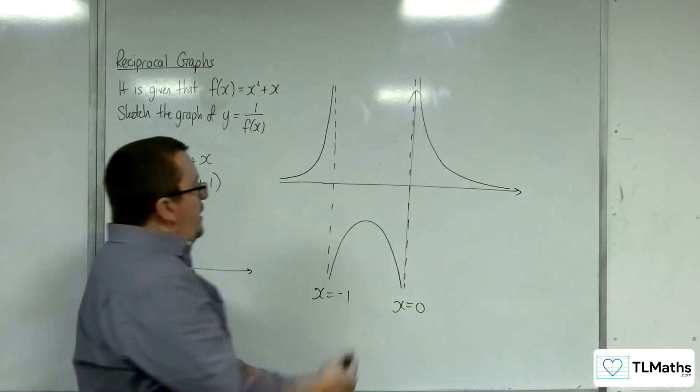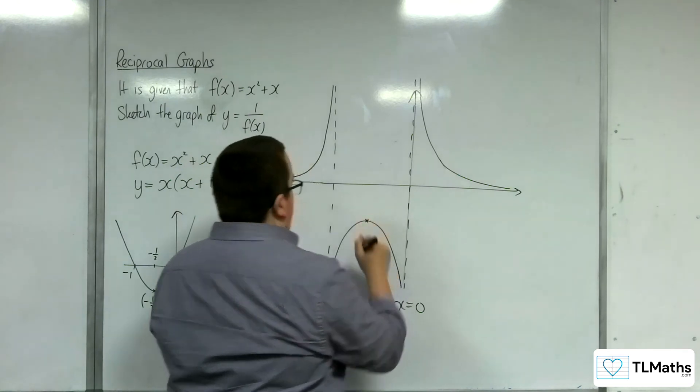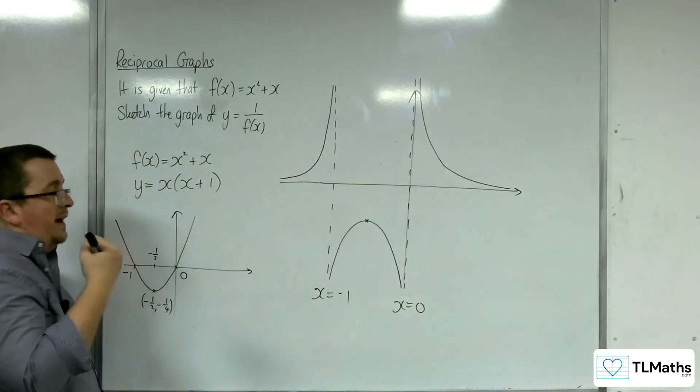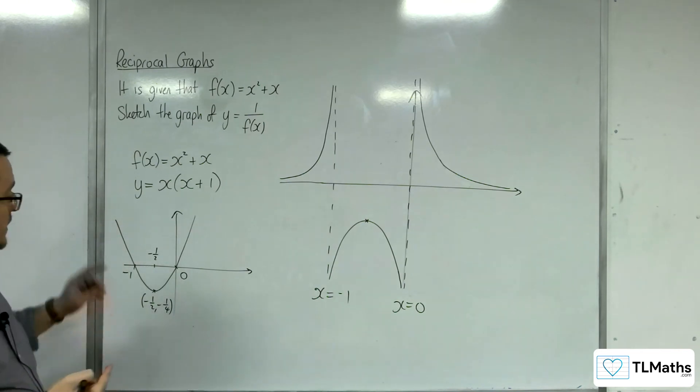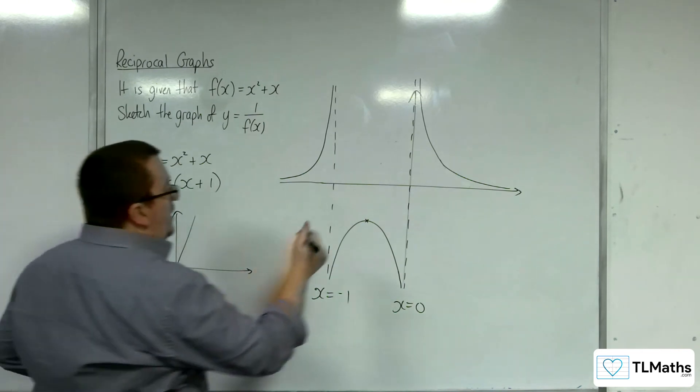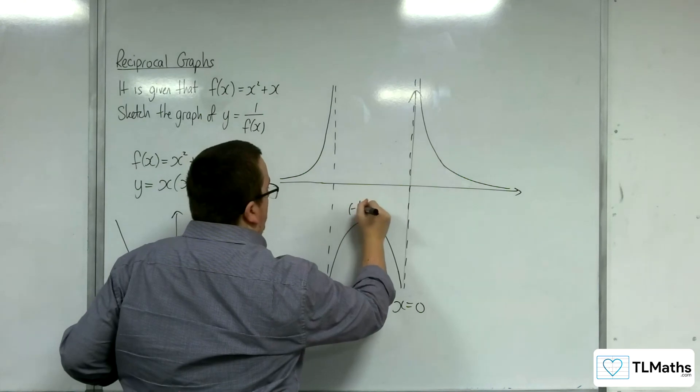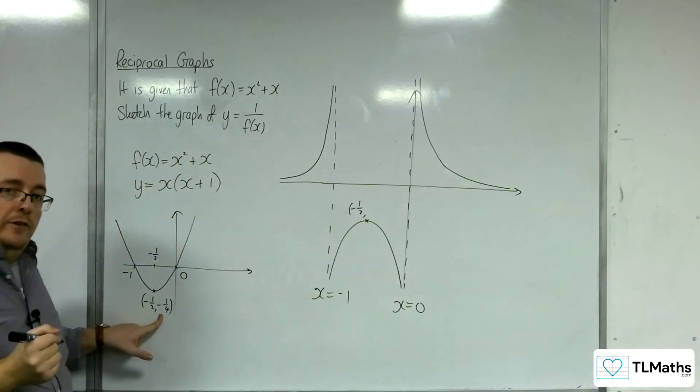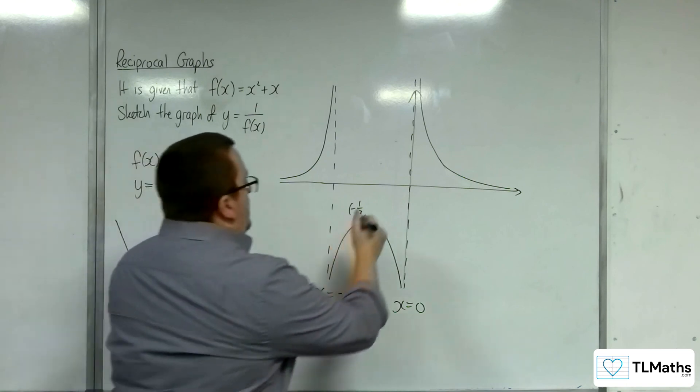This vertex here, this local maximum—we're going to have 1 over these values. So the -1/2 will still be the same. But it's going to be 1 over -1/4, and so that will be -4.